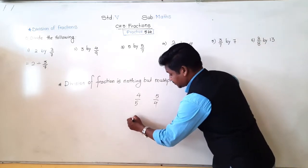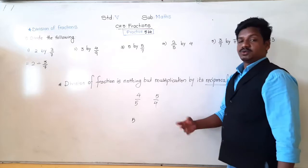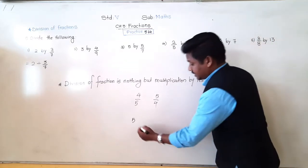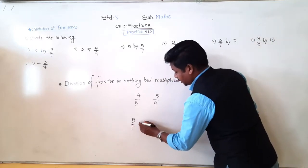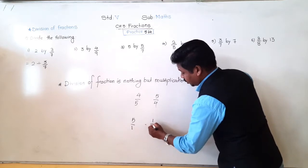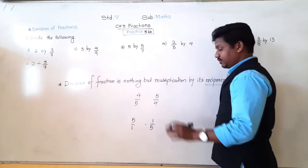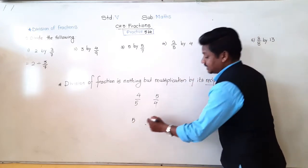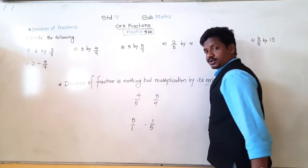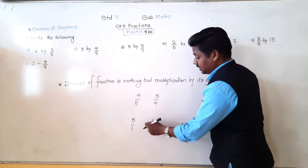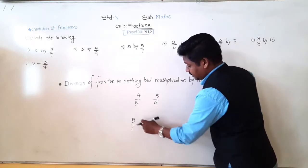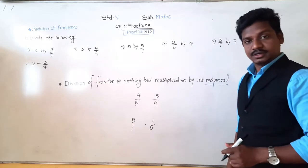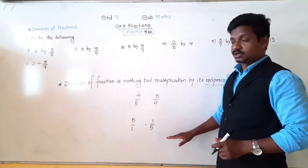If the number is only 5, what will be its reciprocal? It has denominator 1, so the reciprocal will be 1 upon 5. Whenever only a whole number is there, its denominator is always 1. So when we write its reciprocal, 1 will come in the numerator and 5 will go in the denominator. This is called reciprocal.